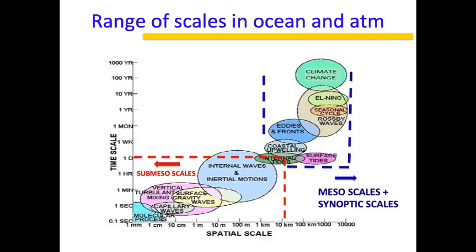We all know that ocean and atmosphere have a range of scales, and these systems vary in time as well as in space. If you look at a typical time and spatial map, we can put different types of systems in this map, starting from turbulent processes like convection all the way to eddies, Rossby waves, and seasonal cycles like the monsoon.